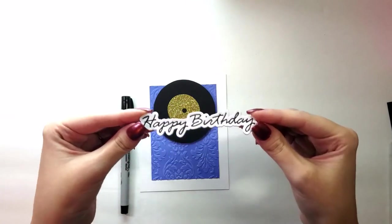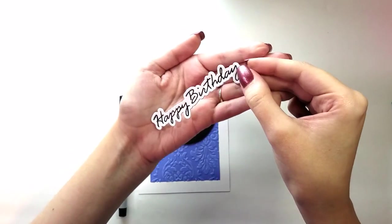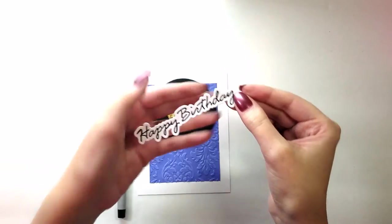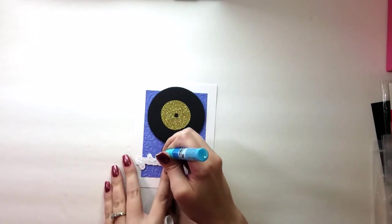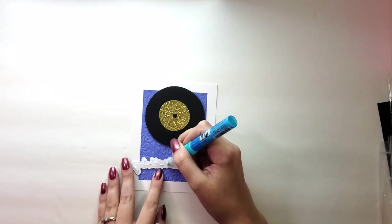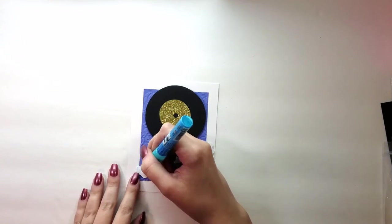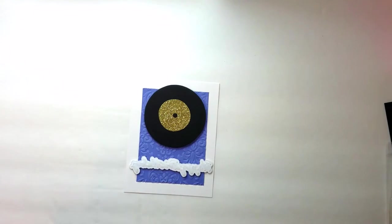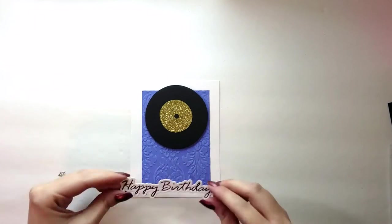It does go ahead and emboss it the first time with this particular die, but I like to go through after I'm finished with a Sharpie, and that way the sentiment shows up better. And I am adhering it down with my Zig two-way glue pen. I'm going to center that on my card and press it into place.